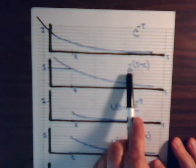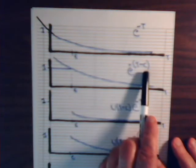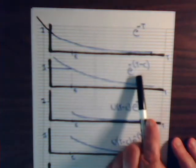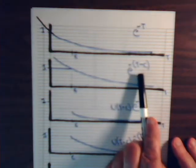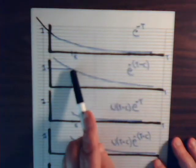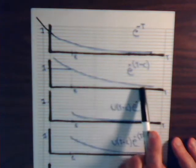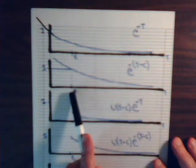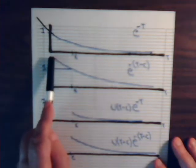Then this, if we have e to the minus t minus c, when t equals c, that's e to the zero, so that's one. It decays like this. And then before that value, it's going to be greater than one.